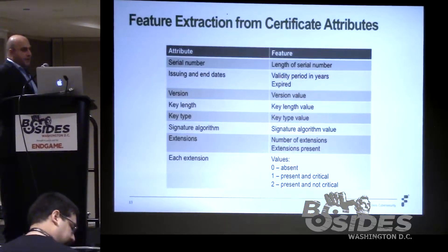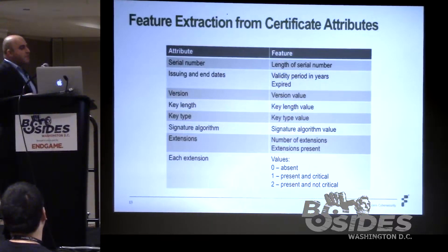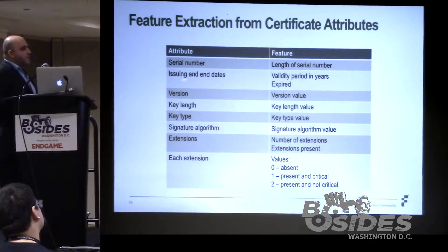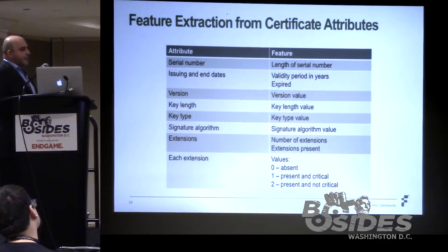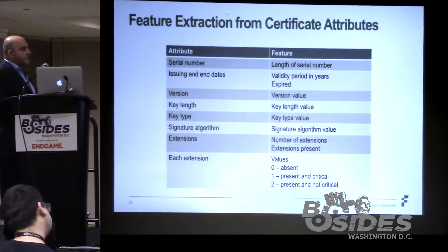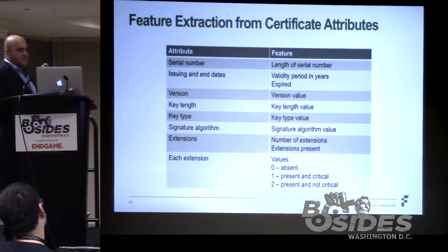The bulk of the work is actually two parts: obtaining the malicious certificates and doing the feature extraction. For the serial number, we use its length, since the value itself doesn't carry meaning. For issuing and end dates, we use the validity period in years — in the sample cert that was 12 years — and whether it's expired or not. Certificate version we use as-is. Key length, key type, and signature algorithm we also use as values. For the extensions as a set, we use the number of extensions and whether extensions are present at all.